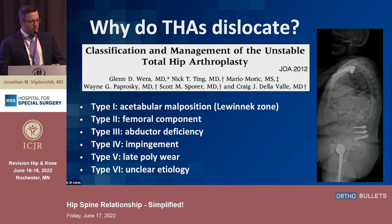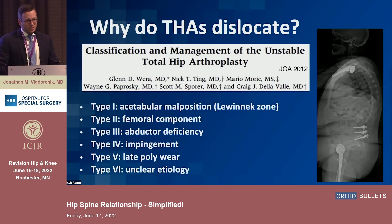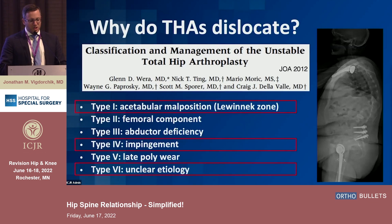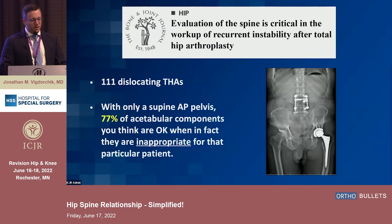When you think about why hips dislocate, there are many reasons: the cup, the femur, abductor deficiency, impingement, late polyethylene wear, or unclear etiology. The hip-spine relationship really covers three of these — acetabular positioning, the femoral component in terms of combined anteversion, impingement — and what was previously 'unclear' is probably hip-spine that we just didn't recognize back in 2012.